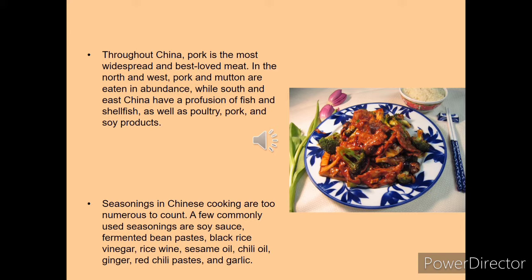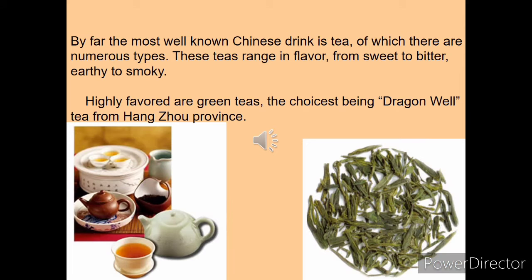That is why people in West China don't eat pork. Seasonings in China's cooking are numerous to count — they use different types of seasonings and flavorings. When we talk about beverages, Chinese people are very fond of tea. They enjoy different types of tea with flavors ranging from sweet to bitter, earthy to smoky, and generally prefer green tea. The most favored tea is Dragon Well tea from Hangzhou province, one of the most popular teas in China.